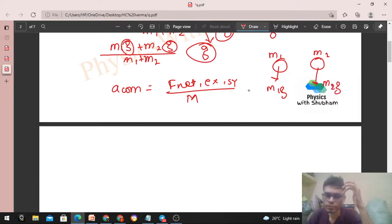So net external force on the system will be m1·g plus m2·g upon total mass of the system, which is m1 plus m2. Again, you are going to get the same result for acceleration of center of mass, that is g.